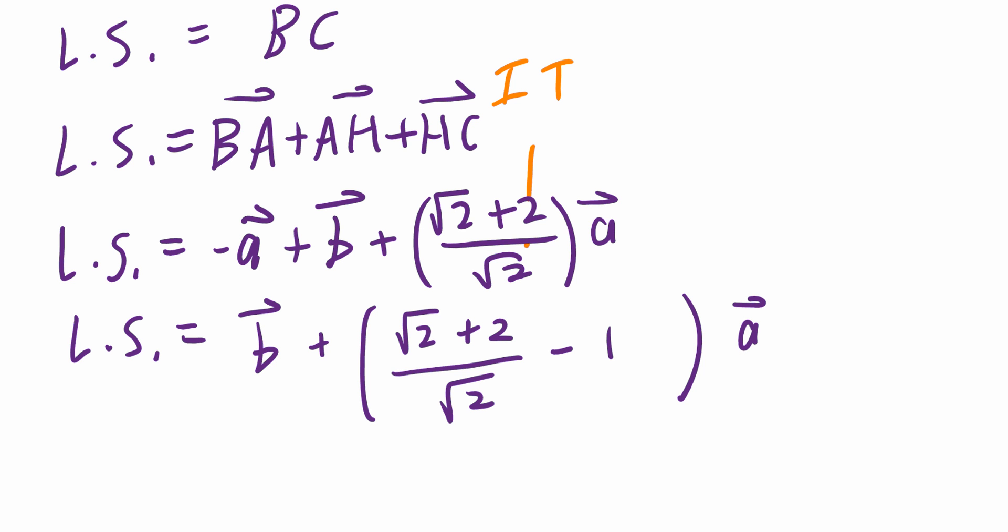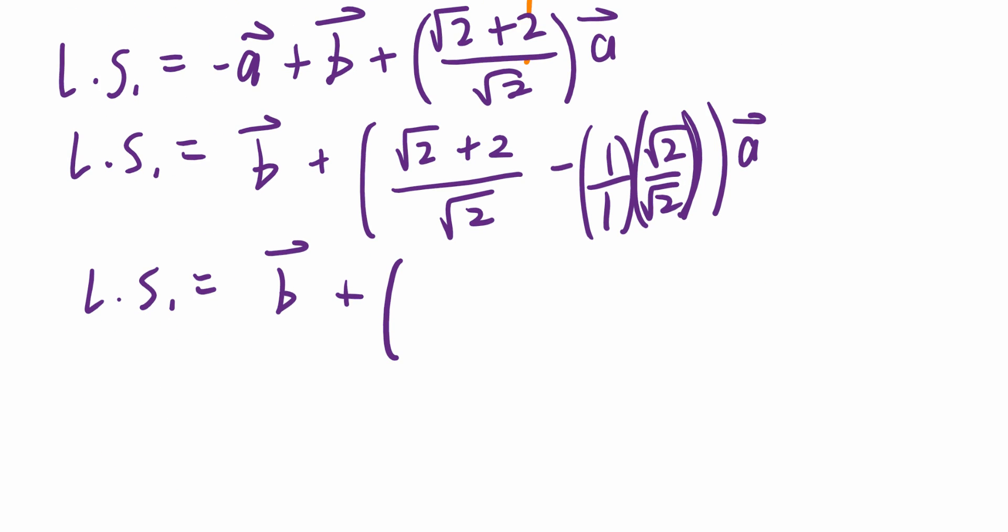Now, don't forget 1 is the same as 1 divided by 1. I can multiply this by the common denominator of root 2. So when I combine this, the left-hand side equals to B plus, again, I put this in brackets. Let me move it up a little bit. The common denominator is going to be root 2. This is going to be root 2 plus 2 minus root 2.